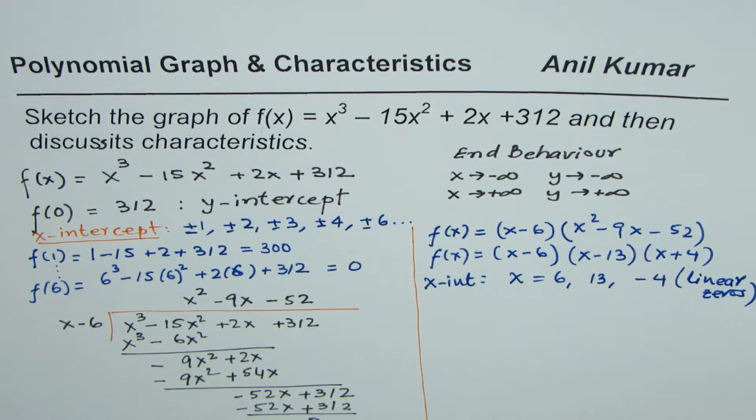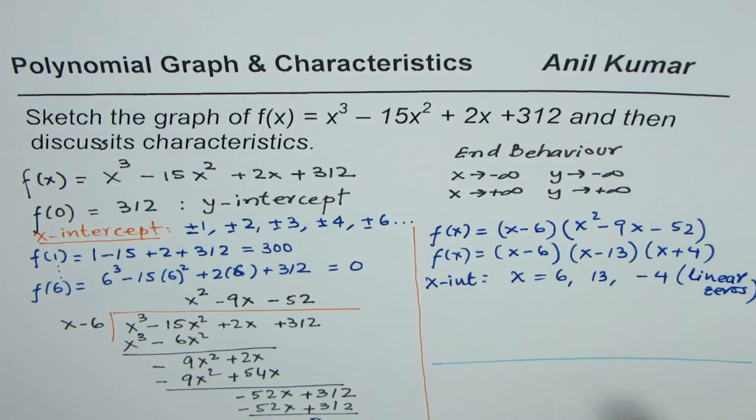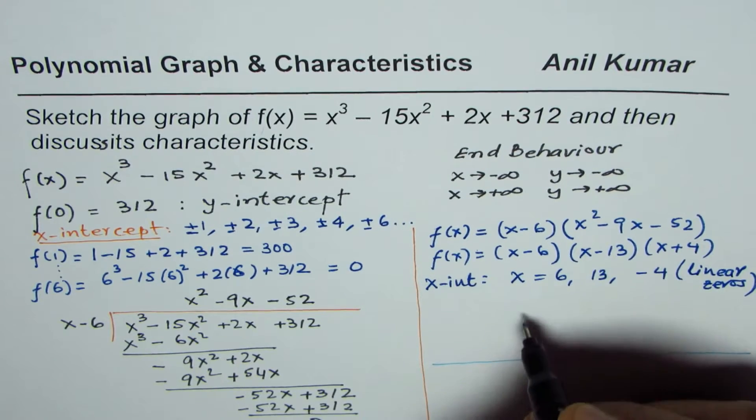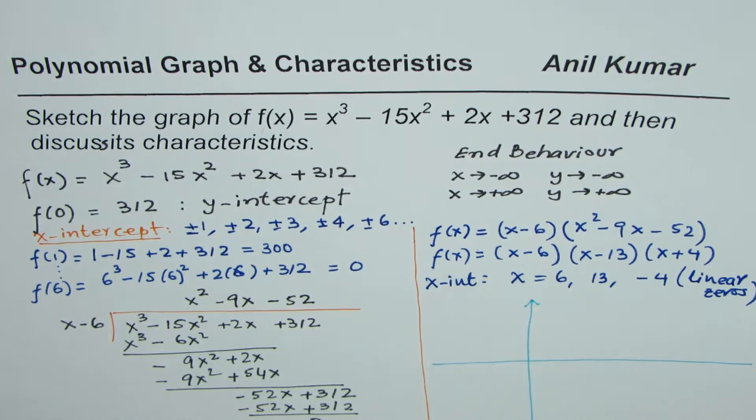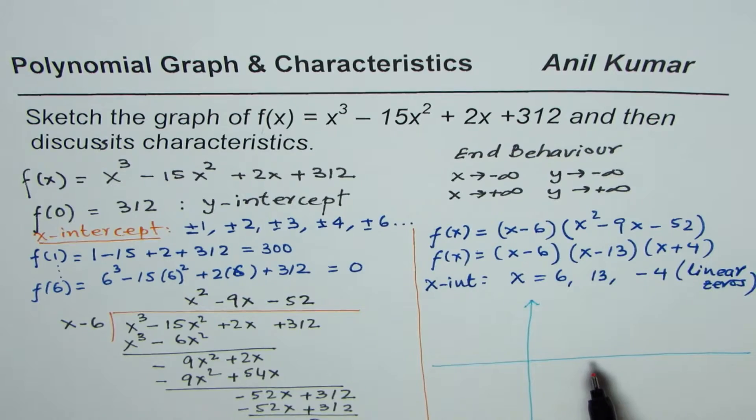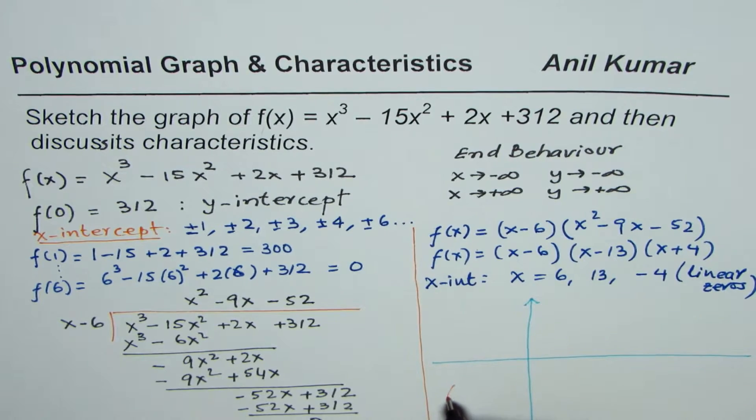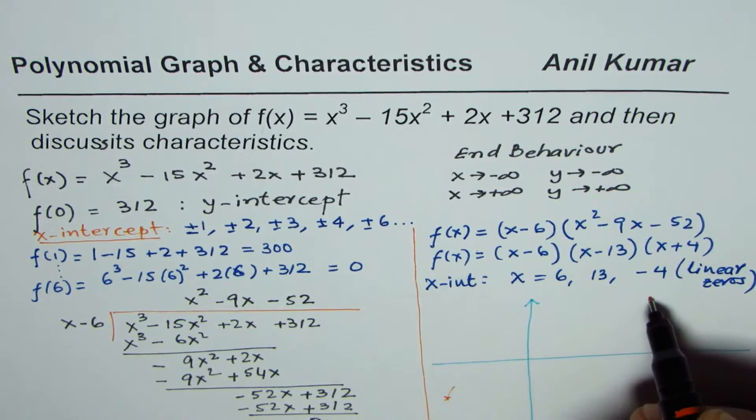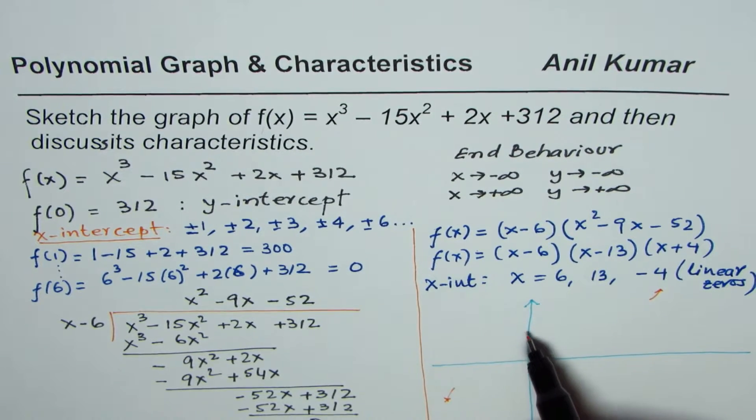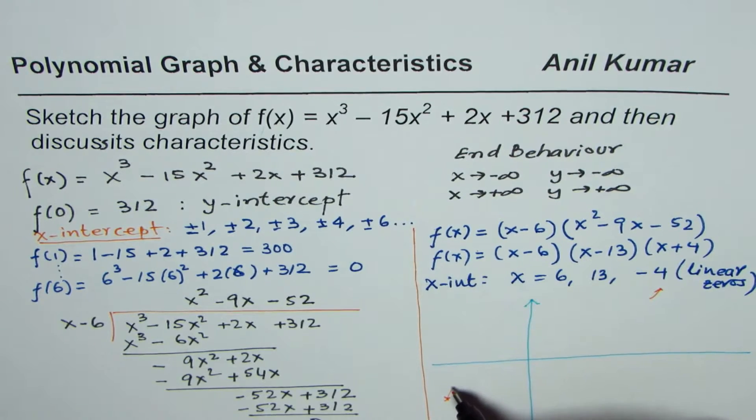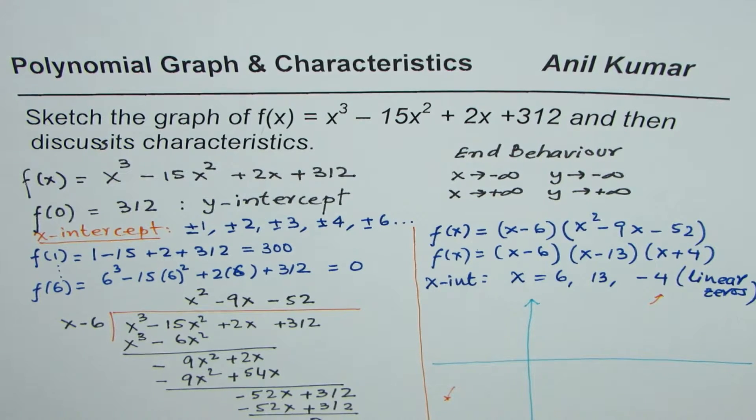That is actually enough to sketch polynomial graph. So let's now sketch this polynomial graph. So we have two zeros on the right side. End behavior is when x is approaching negative infinity, y approaches negative infinity. That means we are in quadrant 3 and we are actually moving from quadrant 3 to quadrant 1. So this indicates the end behavior. Y-intercept is there. It makes sense. So the graph will kind of go like this and come back.